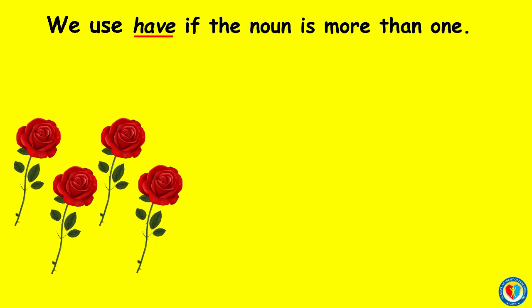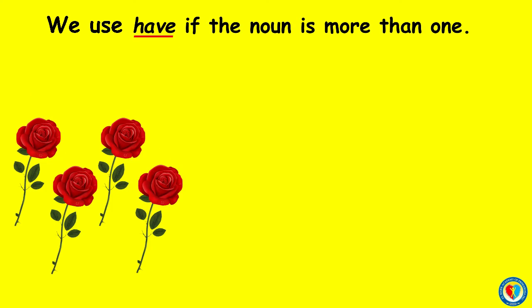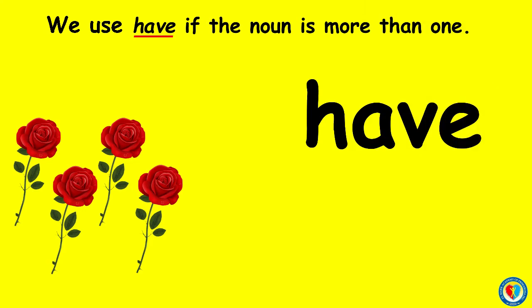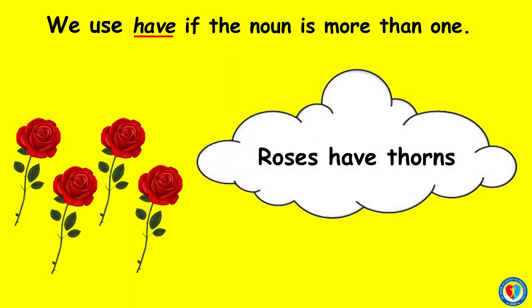Another example: what is the name of these flowers? Correct! These are roses. Can you count them? One, two, three, four. There are four red roses. That means we are going to use have. Roses have thorns. We use have because roses in this picture are more than one.